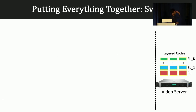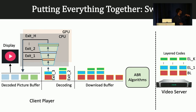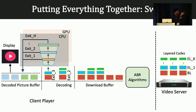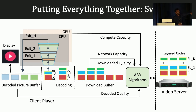Putting everything together in Swift: on the server side, we have layered codes as opposed to independent renditions of video qualities. On the client side, we have the neural layer decoder. The downloaded buffer is scheduled by the ABR algorithm to the scalable decoder to achieve different qualities based on compute capacity, taking statistics from both the compute and network side.